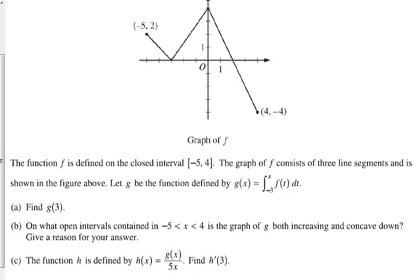Okay, this is F. It has three line segments. G is the function that is the integral from negative 3 to X of the graph that we're looking at.